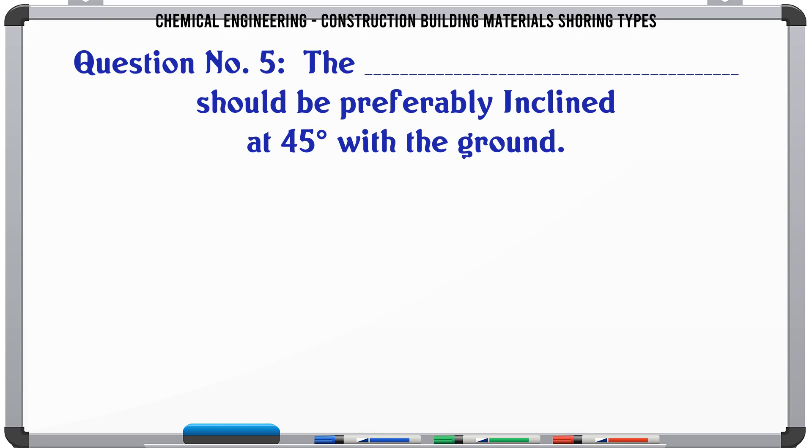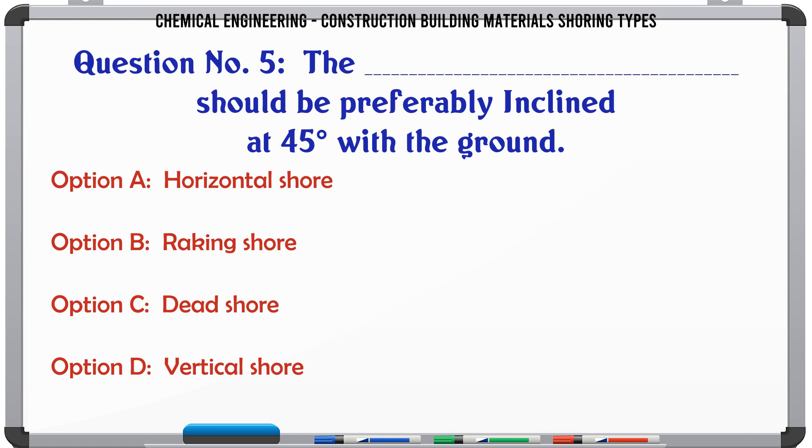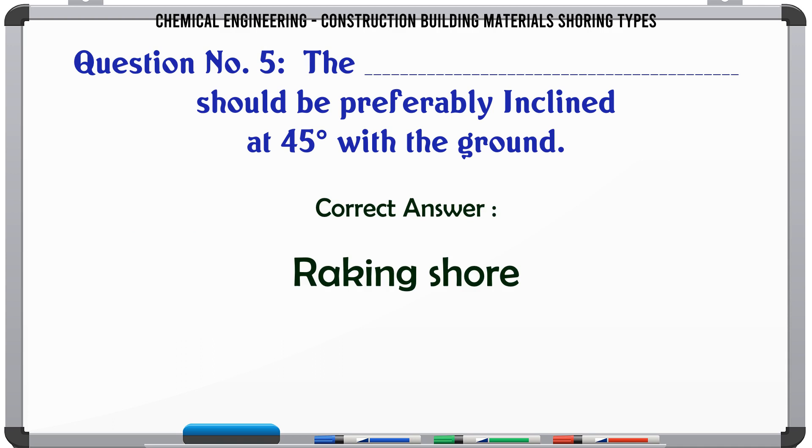Question 5: The blank should be preferably inclined at 45 degrees with the ground. Options: A. Horizontal shore, B. Raking shore, C. Dead shore, D. Vertical shore. The correct answer is Raking shore.